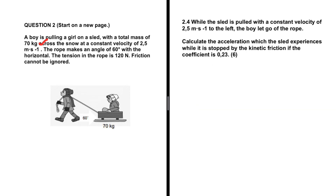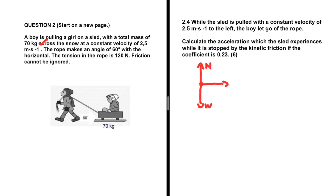For question 2.4: while the sled is pulled with a constant velocity of 2.5 meters per second to the left, the boy lets go of the rope. We need to calculate the acceleration experienced by the sled as it is stopped by kinetic friction, given a coefficient of 0.23. When the boy lets go of the rope, we have the weight and the normal force acting on the object, and the sled is still moving to the west so friction still points to the east.